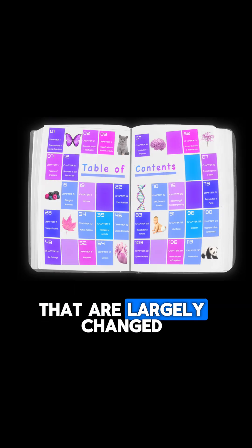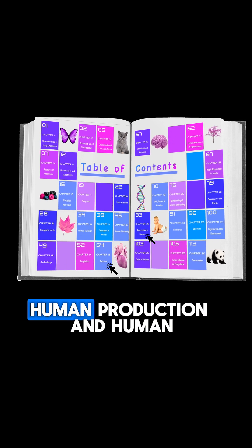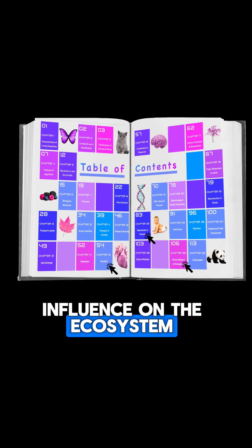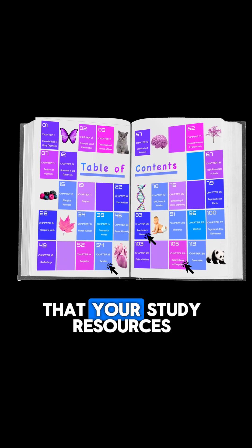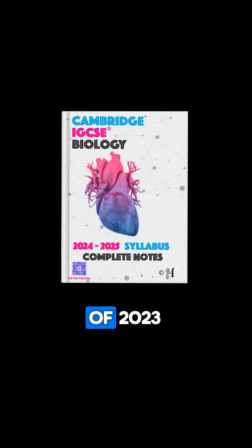Now that you've started solving full past papers and preparing for your final exam, it's important to eliminate those topics that are no longer part of your IGCSE Biology syllabus. There are three topics that have largely changed since the last syllabus. Just make sure that your study resources are updated to the latest syllabus, which is the 2023 syllabus.